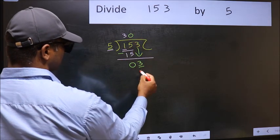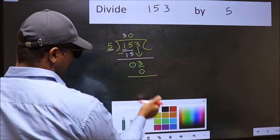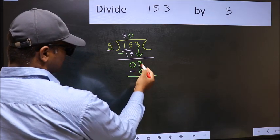So 5 into 0, 0. Now you should subtract. 3 minus 0, 3.